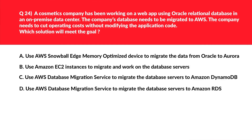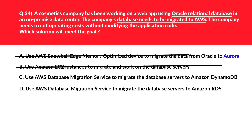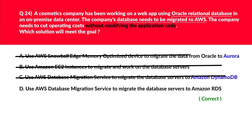This question involves database migration. Option B — using EC2 instances — seems the worst option because there's no mention of how migration will proceed; it's too abstract. Option A uses Aurora, but Aurora supports only PostgreSQL and MySQL, not Oracle as mentioned in the question. Option C uses DynamoDB, which is a NoSQL database — using it would require modifying the application code. Therefore we'll lock D as the correct answer.